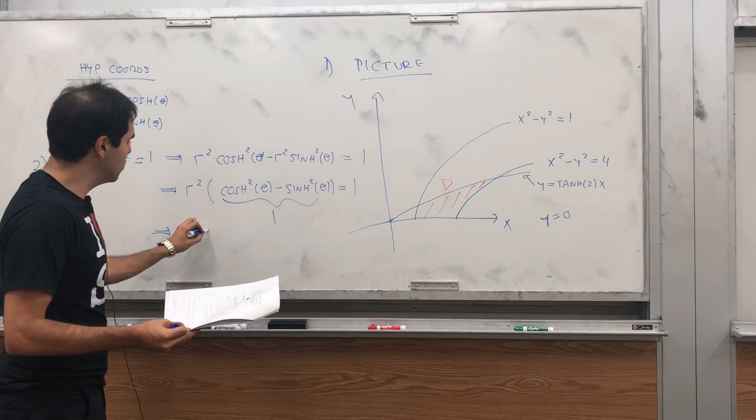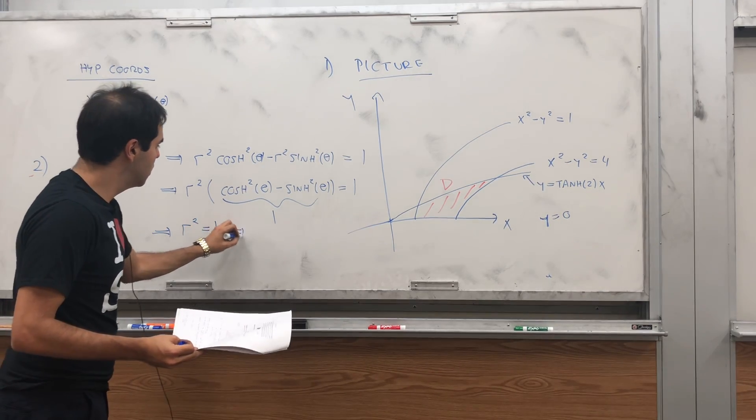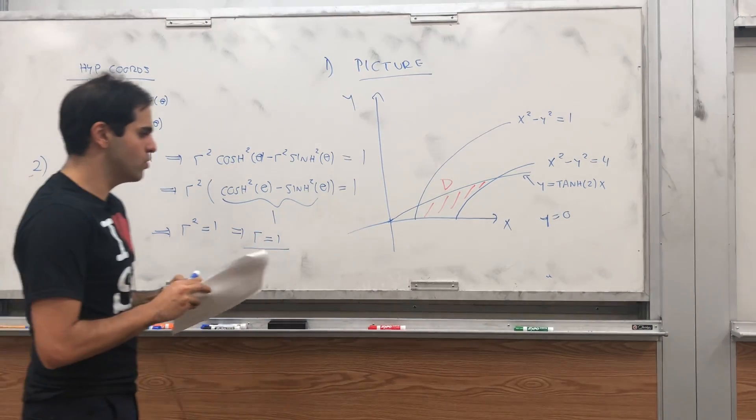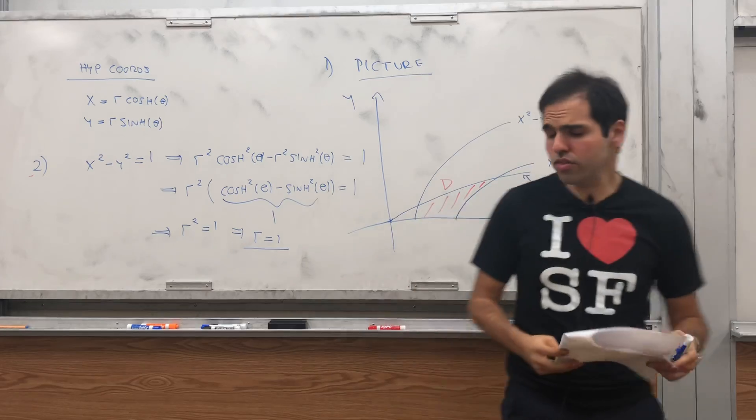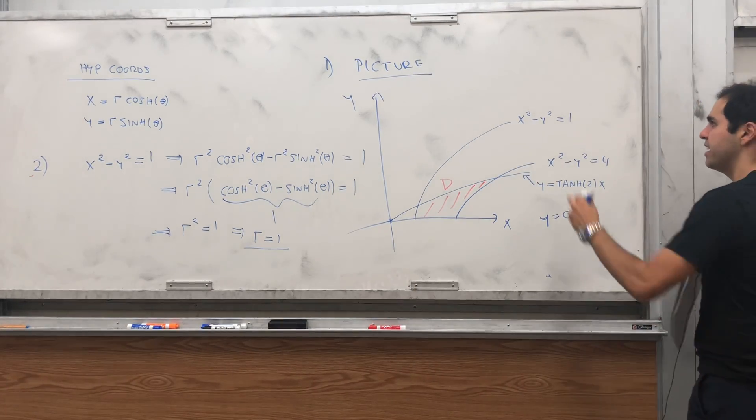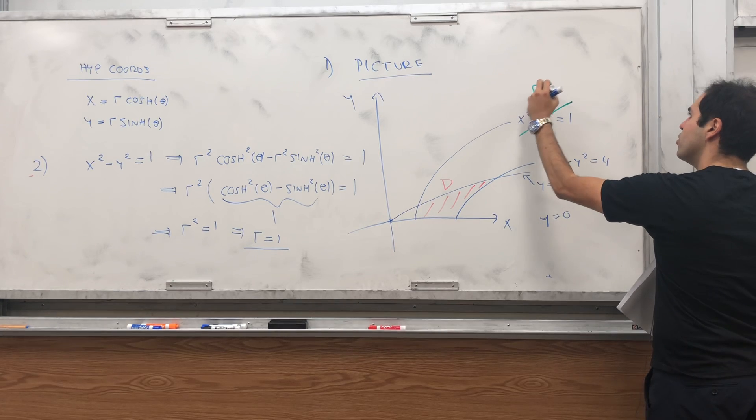For cosine and sine, we have cosine squared plus sin squared equals to 1. Here, we have cosh squared minus sinh squared equals to 1. So, indeed, r squared equals to 1. And so, assuming r is positive, r equals to 1. So, here's the cool thing. This hyperbola, that's very complicated, just becomes r equals to 1.